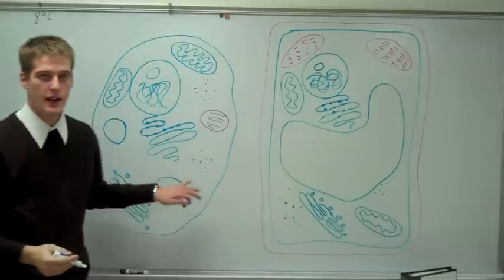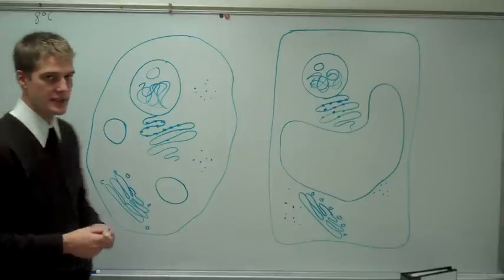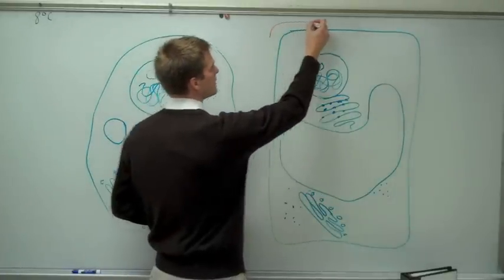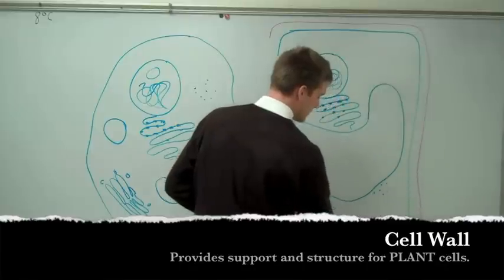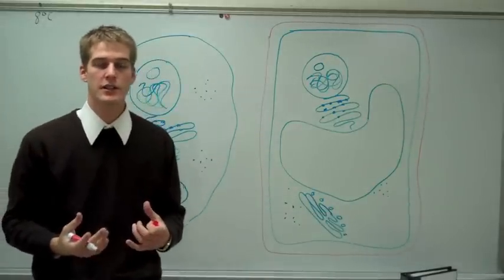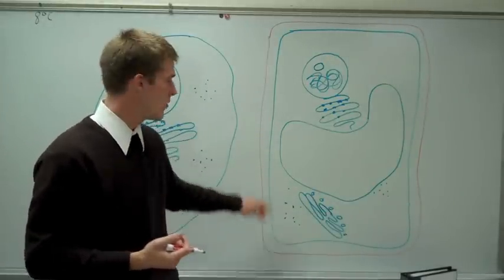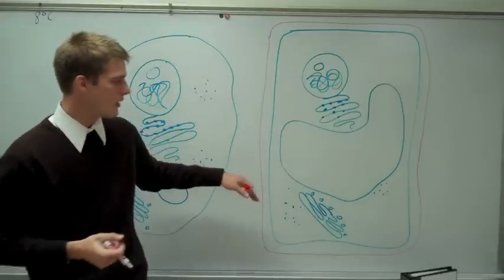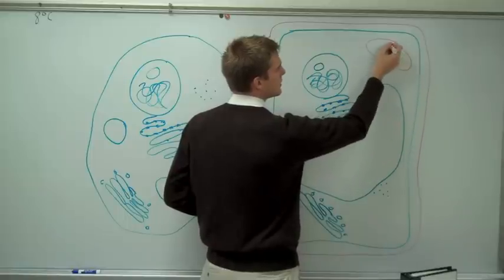Let's move on to what's unique about a plant cell. There are two different things a plant cell has that an animal cell does not. The first is a cell wall. The cell wall is responsible for structure and support of the cell. It's analogous to our bones — our bones help hold us up, and the cell wall in a plant helps hold the plant up. That's why plants can get so large.